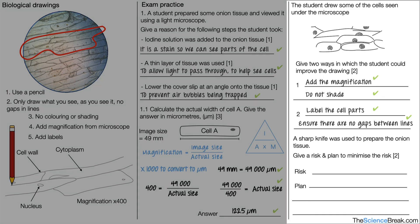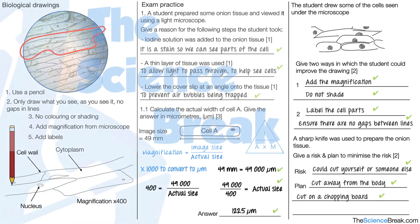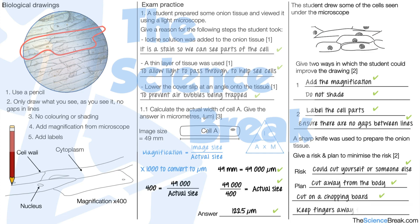And finally, a sharp knife was used to prepare the onion tissue. It says give a risk and plan to minimize the risk. The risk is that you could either cut yourself or someone else by accident. And the plan to minimize that risk is to cut away from the body for one mark, cut on a chopping board for a second mark, or to keep fingers away from the blade for the final mark. Remember, there's a maximum of two marks for that question.